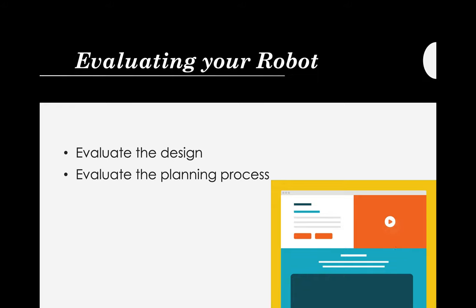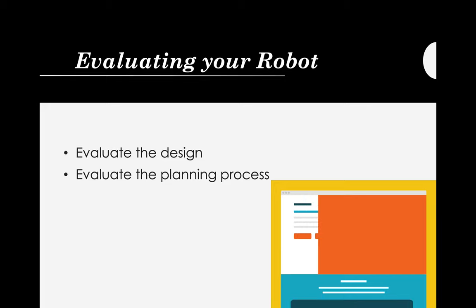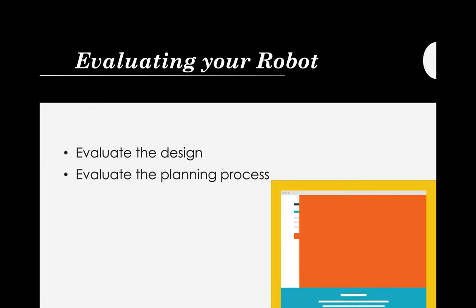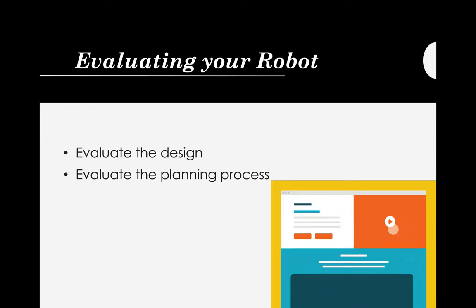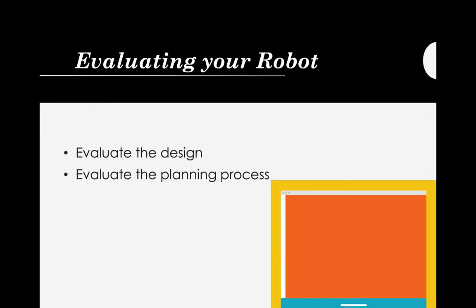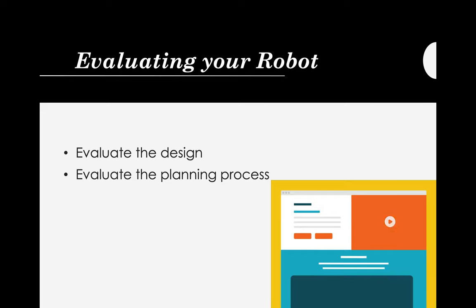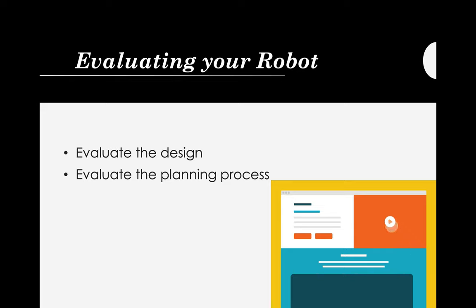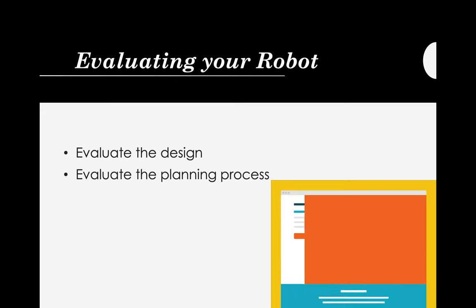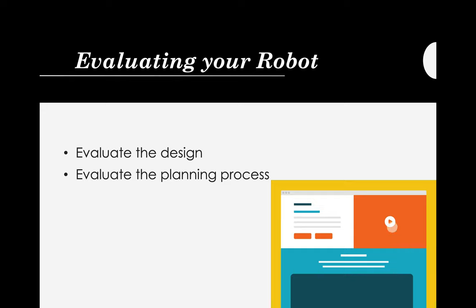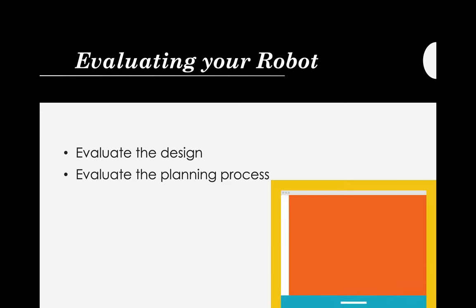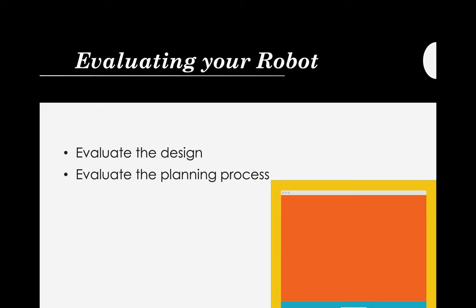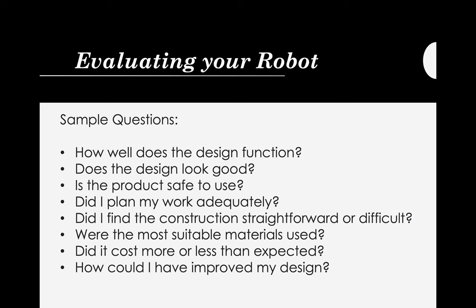Lastly, we need to evaluate your robot. In evaluating, there are several ways. First, evaluate the design — if we can improve it based on a survey or questionnaire given to your stakeholders. Another thing is to evaluate the planning process — if some steps are actually redundant to other steps, you can remove them or create a new plan.